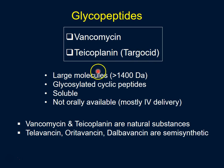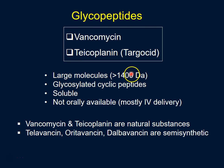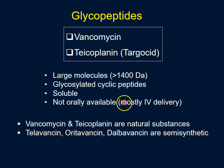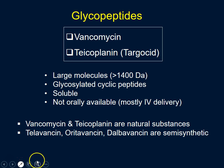These are cyclic peptides, and because they contain sugar molecules and are cyclic, they are soluble. The disadvantage is that they are not orally available because they would easily be broken down in the stomach, so these are delivered mostly as IV. Vancomycin and teicoplanin are natural substances, whereas the others are semi-synthetic and will be covered in the next presentation.